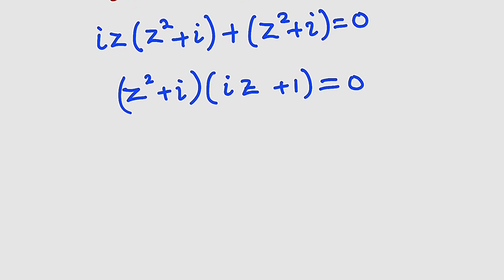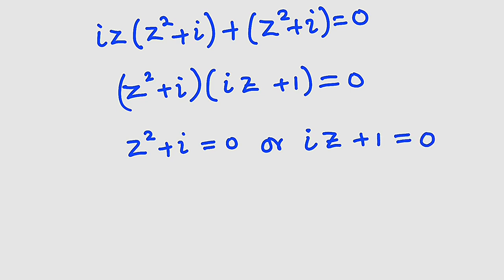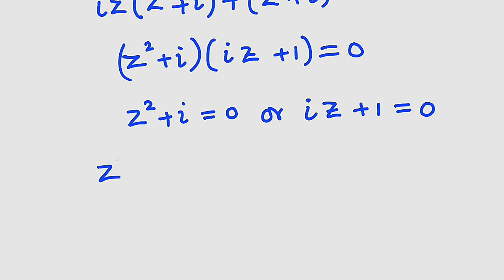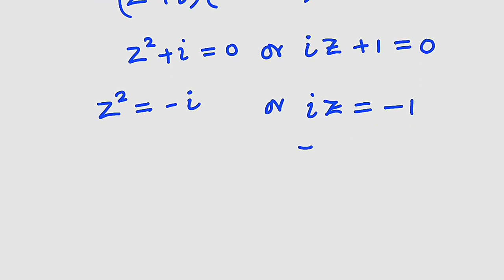These two terms are alike, so we can factor one out. We have (z² + i)(iz + 1) = 0. Setting each factor equal to zero: either z² + i = 0, giving z² = -i, or iz + 1 = 0, giving iz = -1, therefore z = -i.